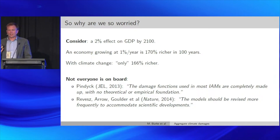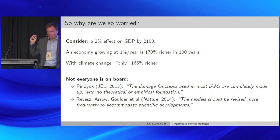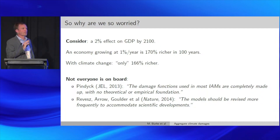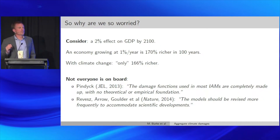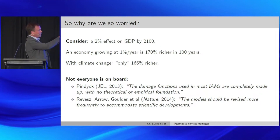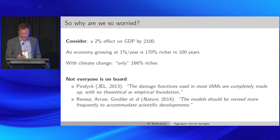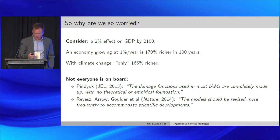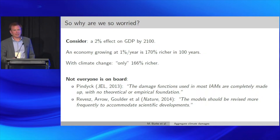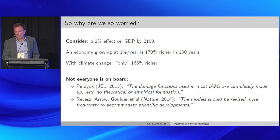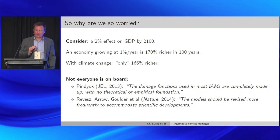Consider a two percent effect on GDP. An economy growing at one percent a year will be something like 170 percent richer by 2100. With climate change knocking two percent off that, it will only be about 165–166 percent richer instead. So why are we worried? Why is this a big deal? As Max set up and Tama showed, new evidence — not everyone is on board with the older science that went into estimating these original damage functions.